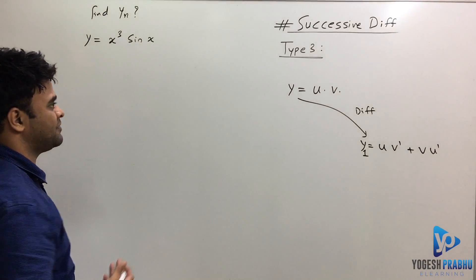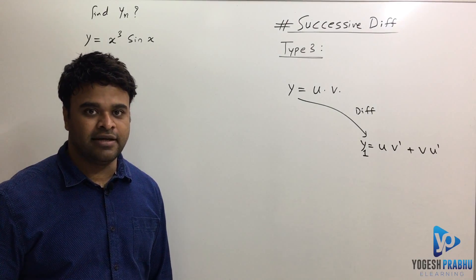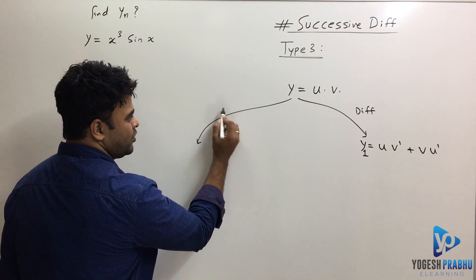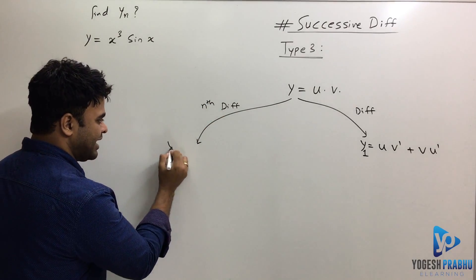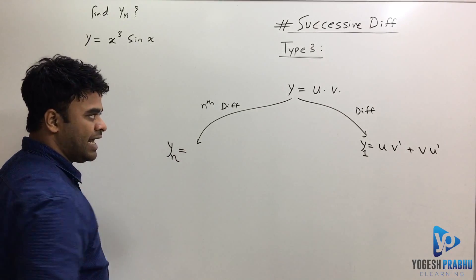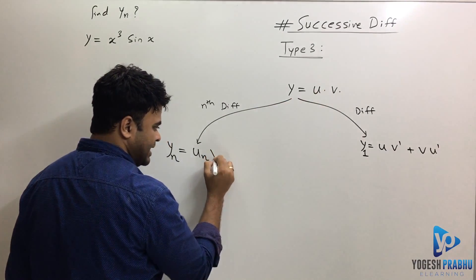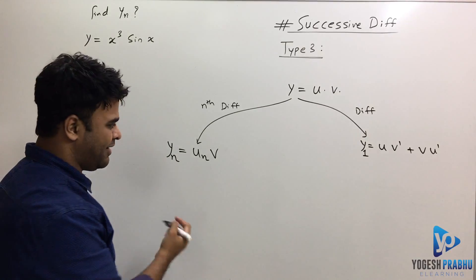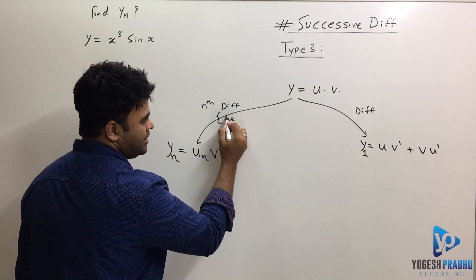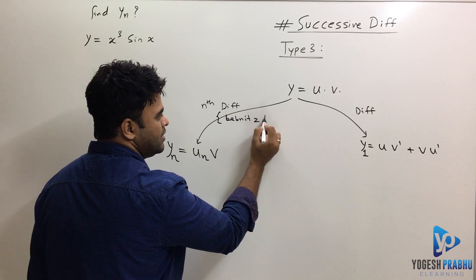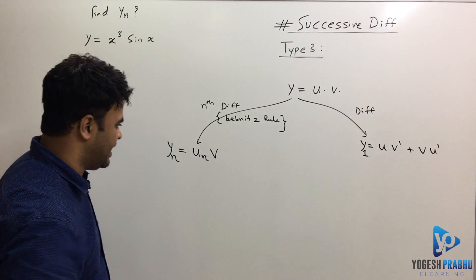The question is not asking about the first differentiation — we want to find the nth differentiation. There is a formula for that. If I want to find the nth differentiation, written as y_n, the first term is the nth derivative of u, with v as it is. This standard formula is called Leibnitz rule — the Leibnitz rule of nth differentiation of a product of two terms.